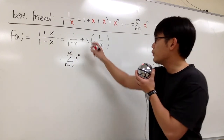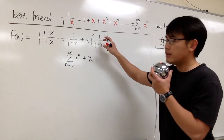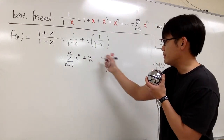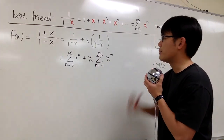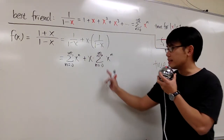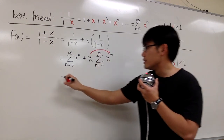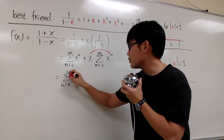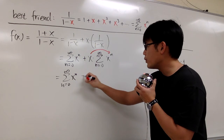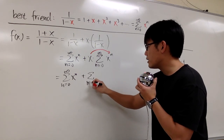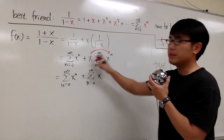For the second term, we have plus x times the parenthesis, which is also our best friend. We can write it as sigma when n goes from 0 to infinity, x to the n power. The difference is that we have this x in front, so we multiply it inside. The second sigma becomes sigma when n goes from 0 to infinity, x to the n plus 1 power.